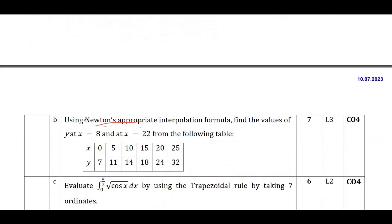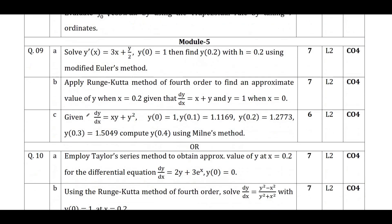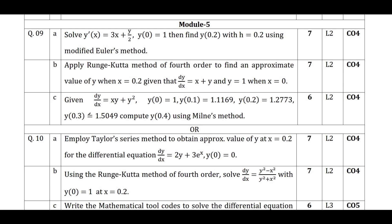Coming to Module 5, which is Numerical Methods 2. In this module there are only four methods: Taylor series method, modified Euler's method, Runge-Kutta method of fourth order, and Milne's method. If you study all four methods or any three of them, you can definitely score 20 out of 20 in this module.